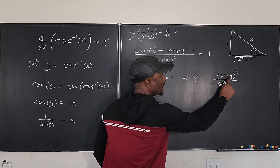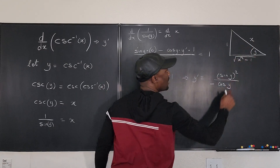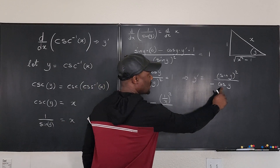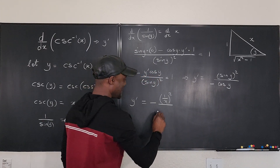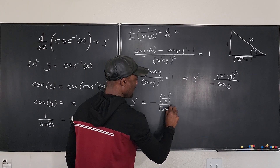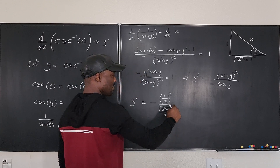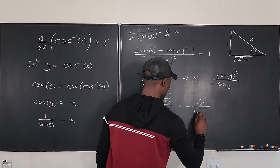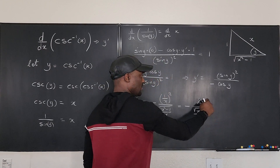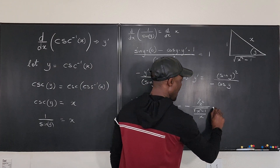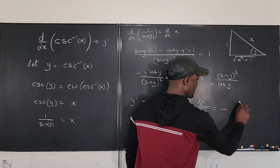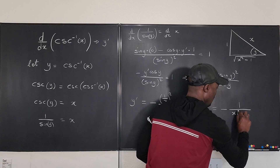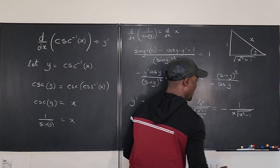From the triangle: sine y is opposite over hypotenuse, which is 1 over x. Cosine y is adjacent over hypotenuse, which is square root of (x² − 1) over x. Substituting into y prime equals sine squared y over negative cosine y: that gives (1/x²) divided by (−√(x²−1)/x). Multiplying top and bottom by x² simplifies to negative 1 over (x times √(x²−1)).